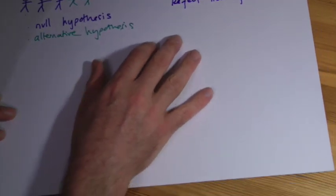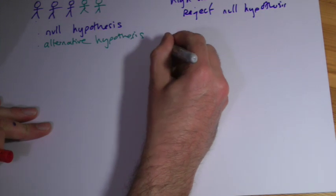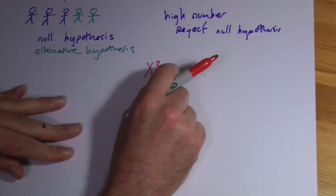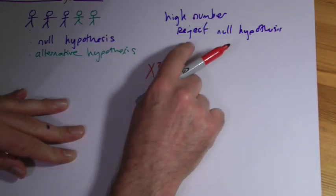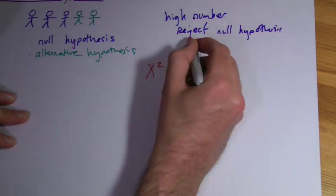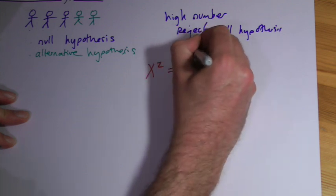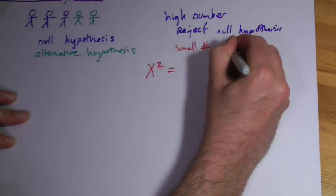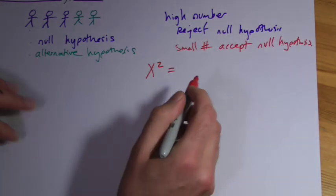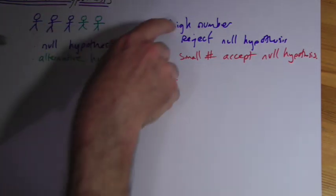That's the idea behind the null hypothesis. How does it relate to what you're doing? The place you'll come across this is in the chi-squared test. When you work your way through a chi-squared test and come up with a number, that number represents a statistical probability — your ability to reject the null hypothesis. The quick and easy way to look at it: if it's a big number, you can reject the null hypothesis. If it's a small number, you accept the null hypothesis. The problem then becomes: what do you mean by big and what do you mean by small?